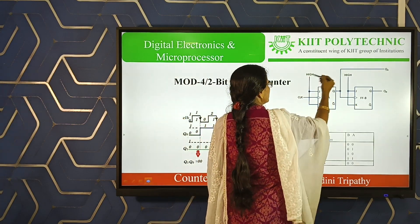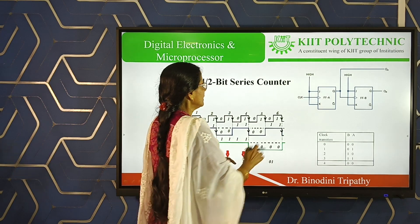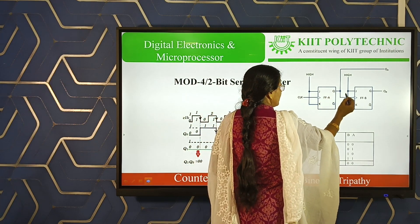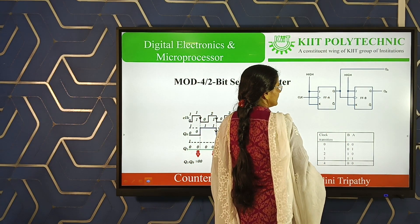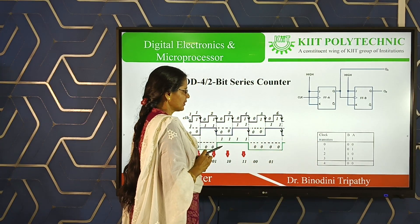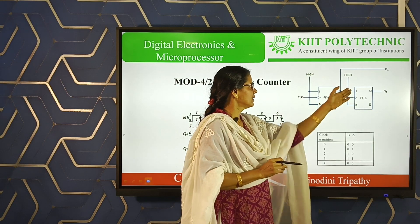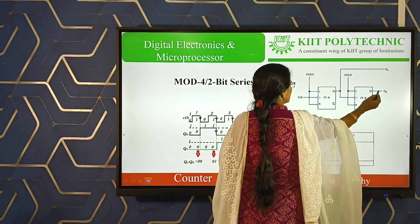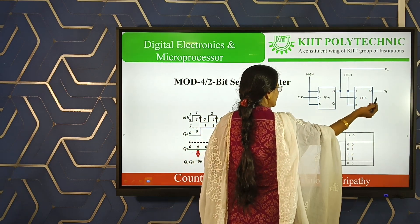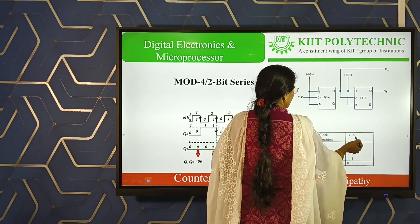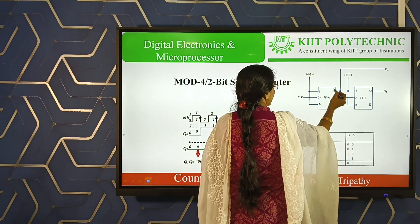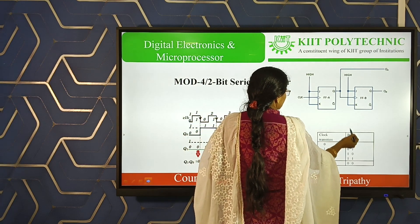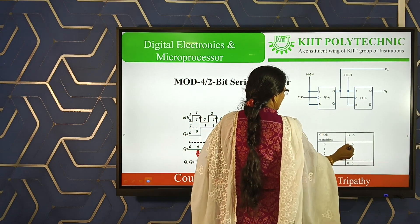First, connect both J and K to high or logic 1. Then, the main clock pulse is applied to the first flip-flop. The output of the first flip-flop is used as the clock input for the second flip-flop. Now, how will this circuit function? Initially, all the flip-flops are reset to 0. So initially, you get 0 here and 0 here. If you designate your outputs as A and B, then A is 0 and B is 0.